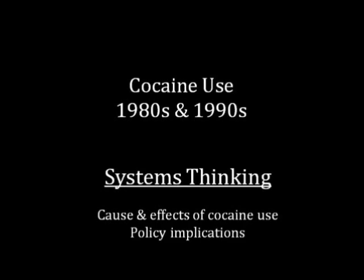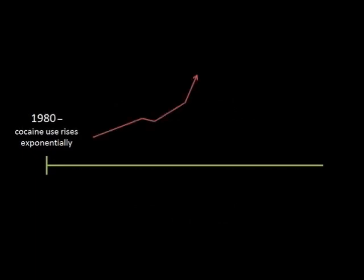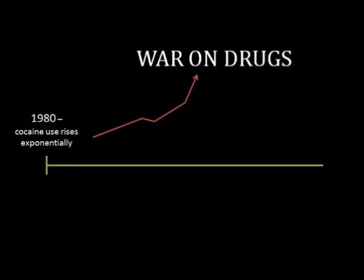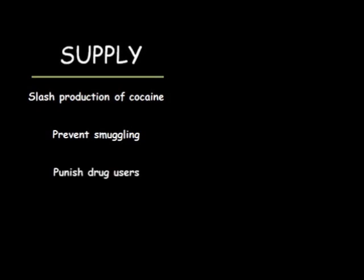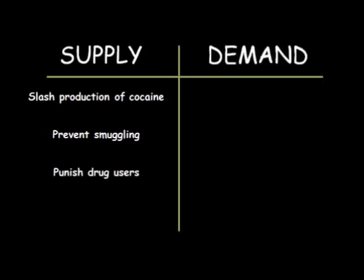In the 1980s, cocaine use increased dramatically. The U.S. declared a war on drugs. When the government wanted to enact policies to stop cocaine use, they really focused on the supply side of things. They thought about slashing production, wanted to choke off smuggling into U.S. borders, and create larger penalties for possession and sale.